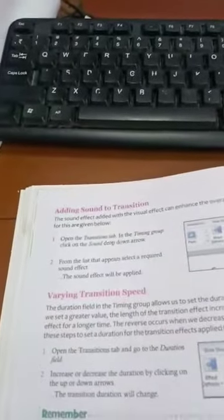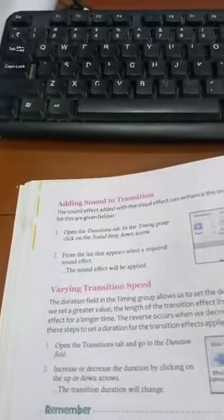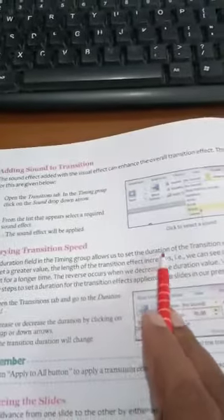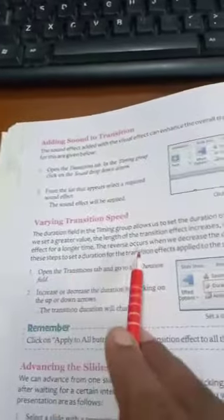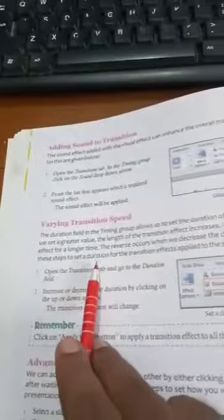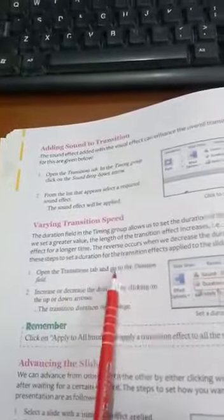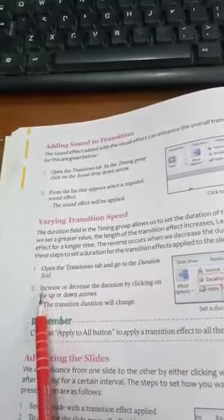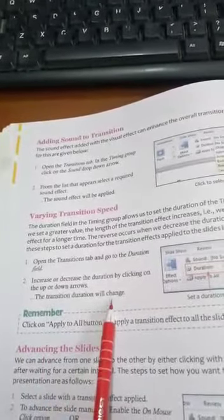Varying transition speed — how you want to set the transition speed, slow or fast. The Duration field in the Timing group allows us to set a duration for the transition effect. When we set a greater value, the length of the transition effect increases and we see it for a longer time. The reverse occurs when we decrease the duration value. Open the Transitions tab, go to the Duration field, and increase or decrease the value by clicking the up or down arrows.